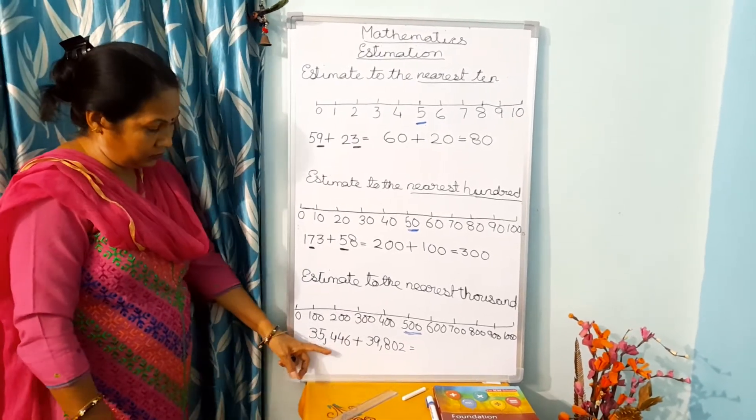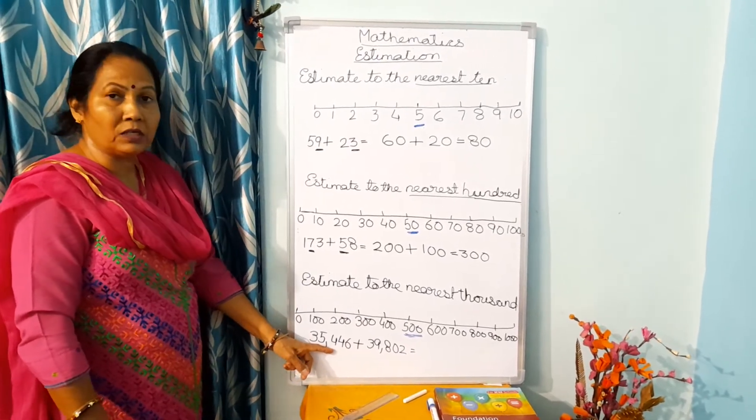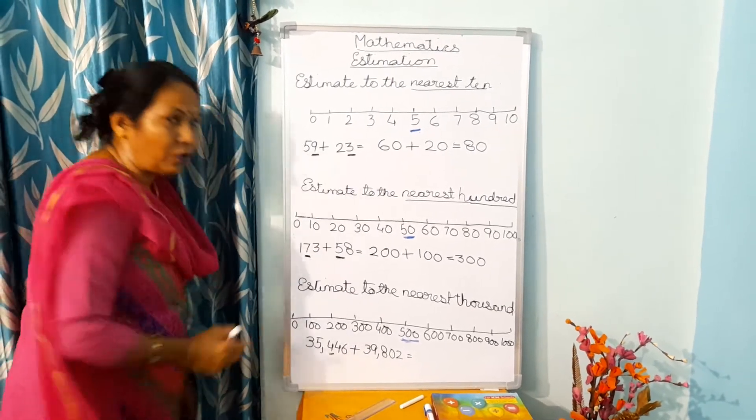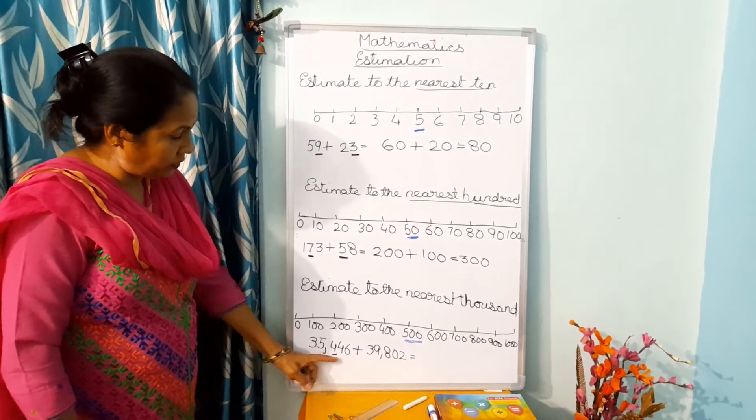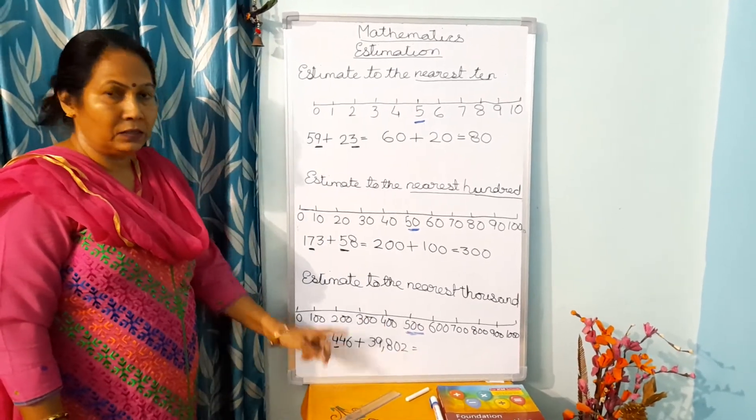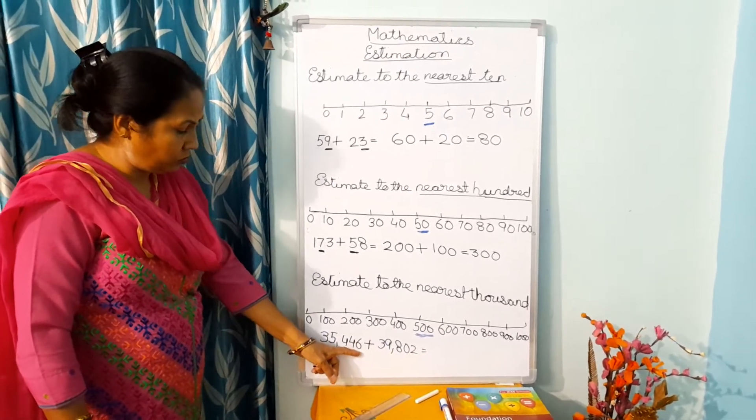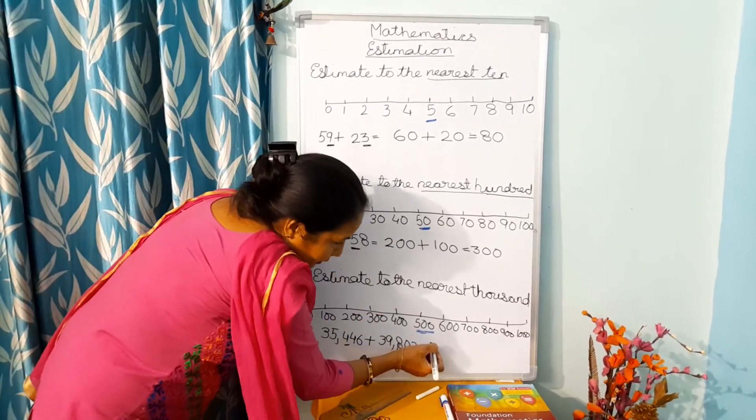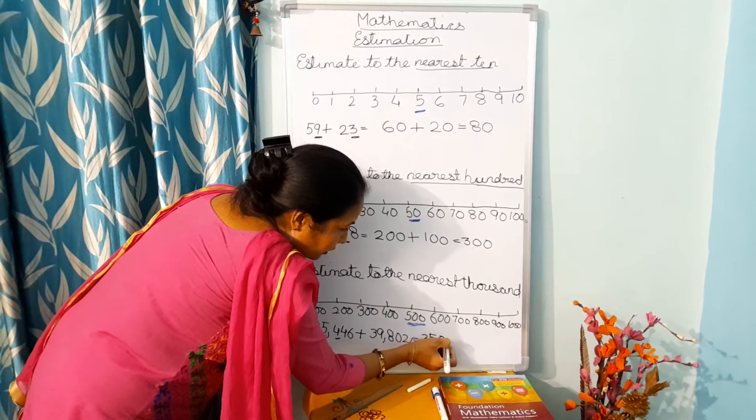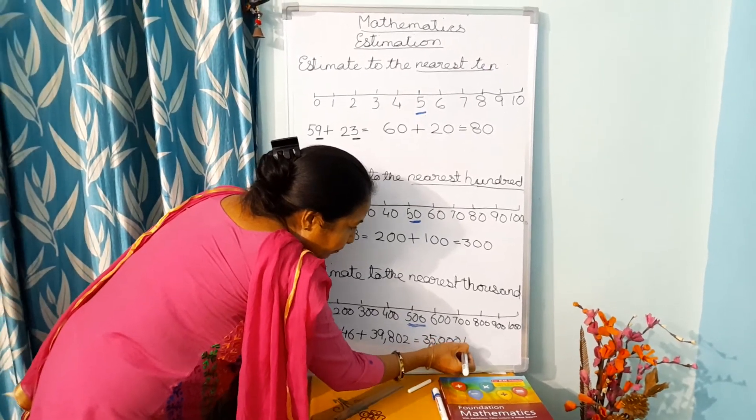Now in this number, you are going to see the 1000's place. Here you will see you have 4. Now 4 means 400. So this is less than 500, so this is not going to change. This will remain 35,000 plus...